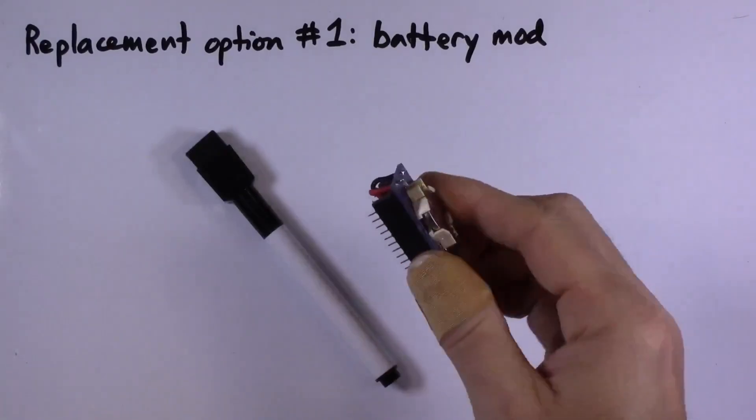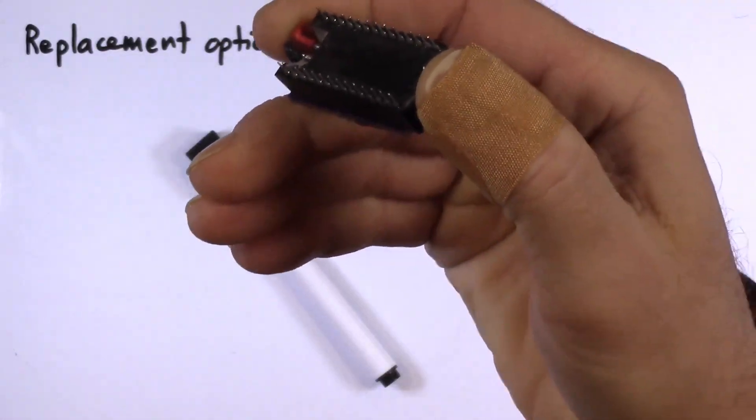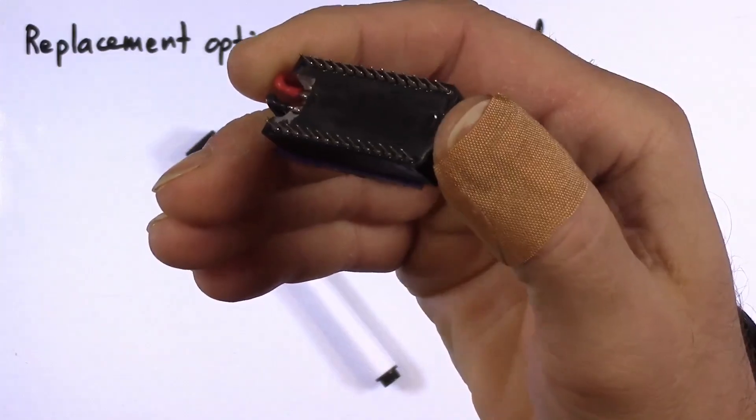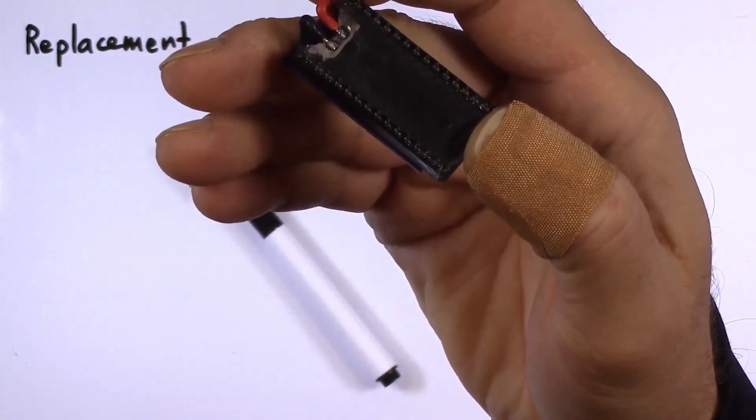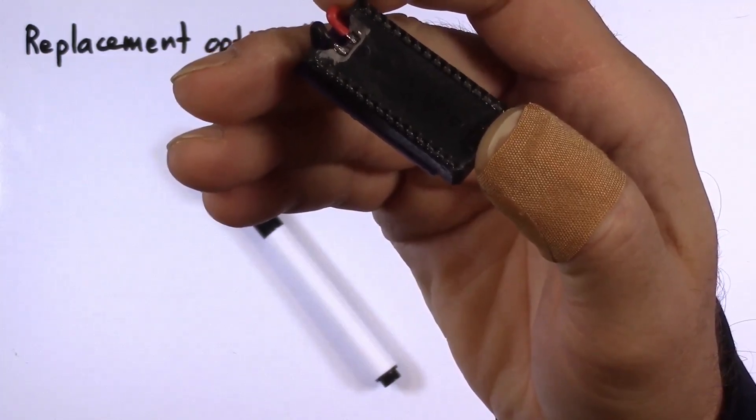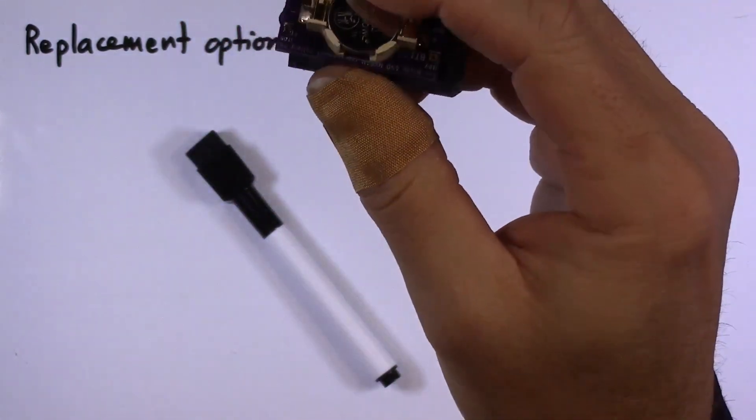Here's a slightly closer look at my somewhat ham-fisted attempt to do the battery mod on one of these M48T59Ys. I somehow wound up going in from the bottom to find the battery contacts, which I don't think is quite right. But in any case, this did work.